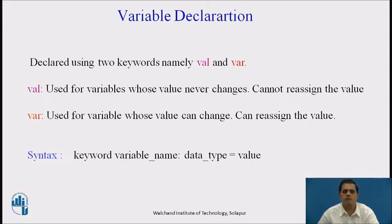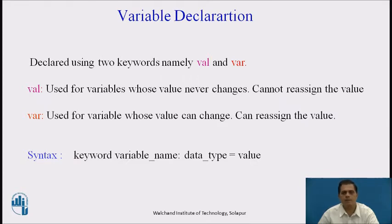The syntax for Kotlin variable declaration is: keyword, variable name, data type, equal to, value. This syntax is totally different from Java. Here we write the keyword, then the variable name which is a valid identifier, then the data type, and then the value we are going to assign to that variable.